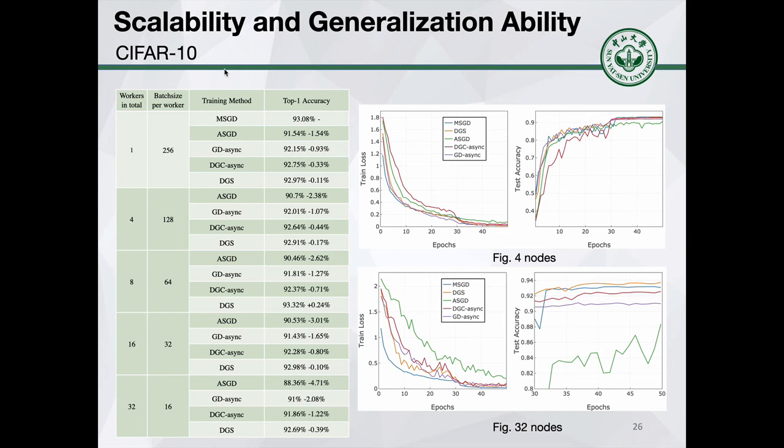In this CIFAR-10 result table, we can observe that the test accuracy decreases as the number of workers increases. This is because with more nodes, async SGD brings more staleness. Compared to other approaches, our approach achieves the best accuracy and the accuracy only drops a little bit due to the large number of workers.